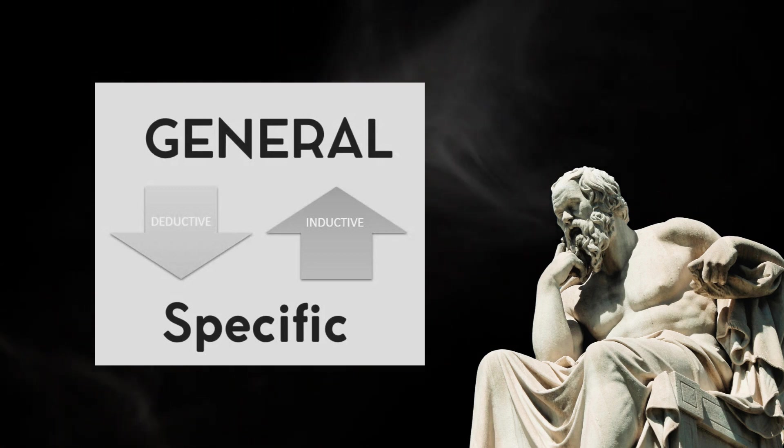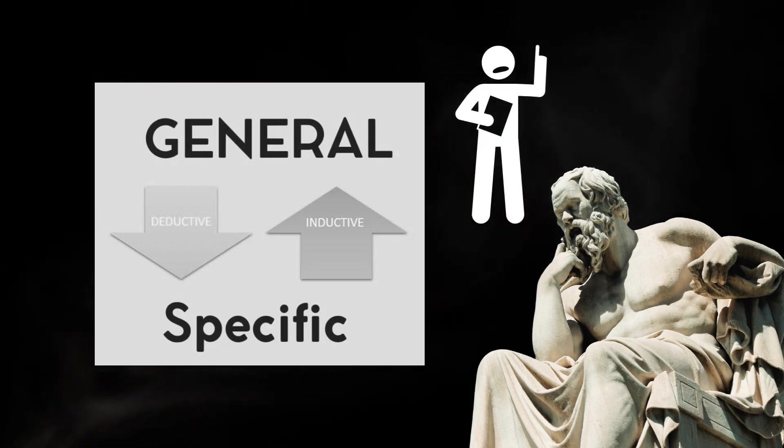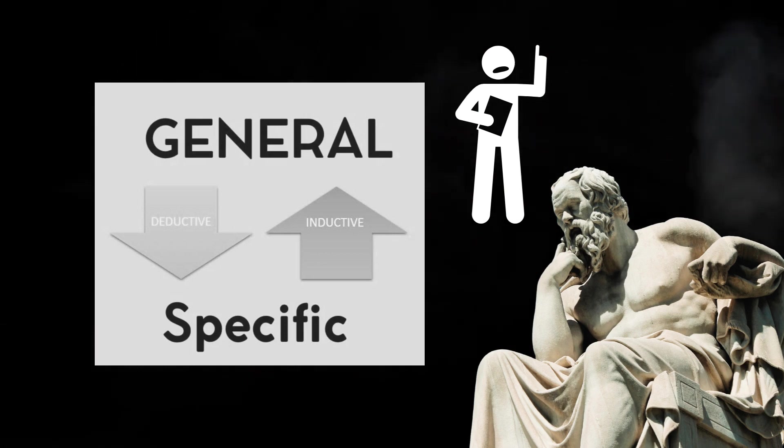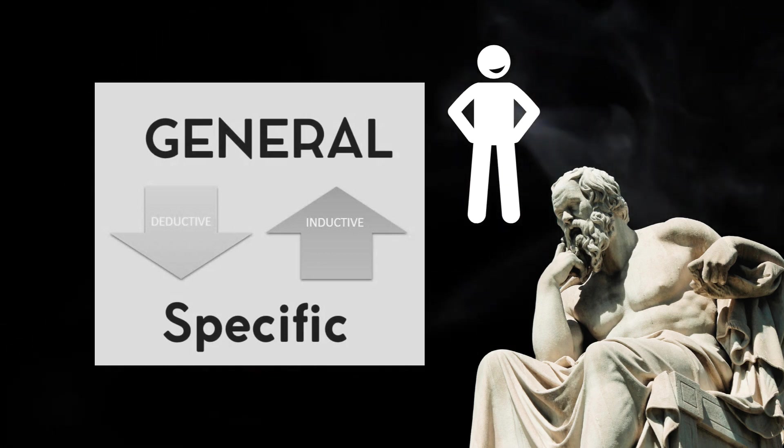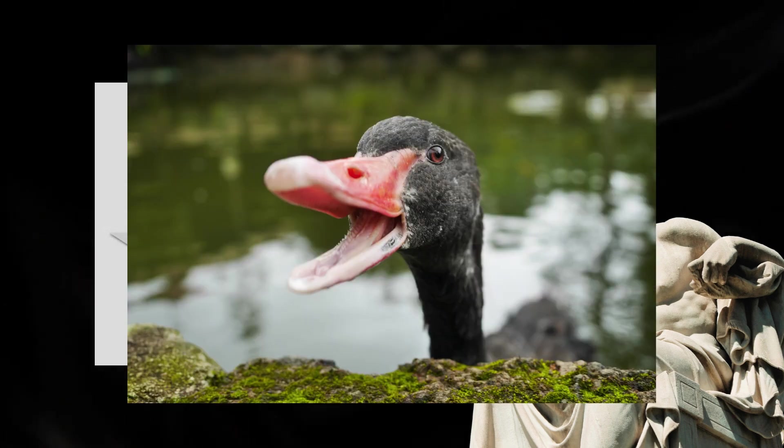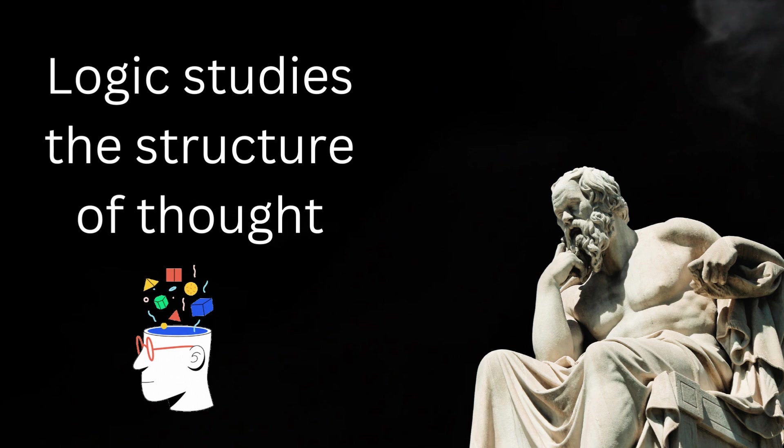Deductive arguments establish certainty when correct. For example, if all men are mortal and if I am a man, then it is certain that I am a mortal. Whereas inductive arguments establish only probability, not certainty, because perhaps, who knows, we'll discover some black swan. Now, traditionally understood...